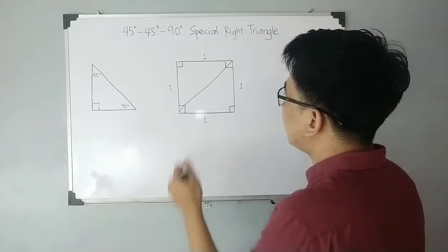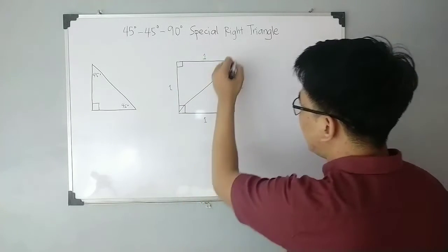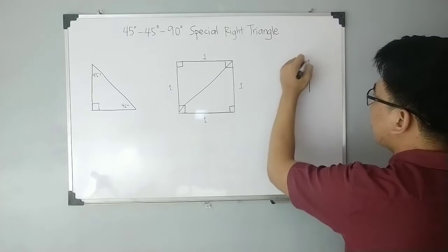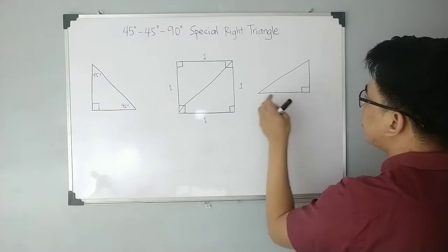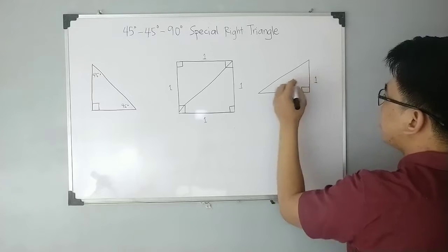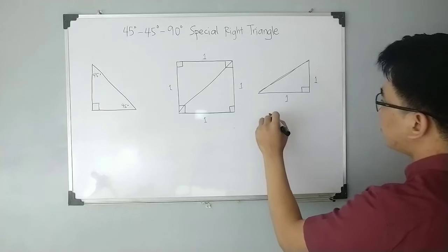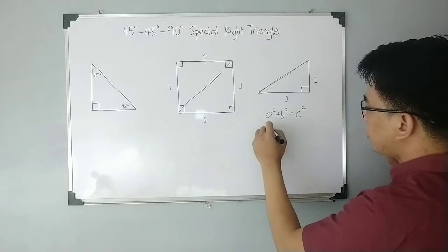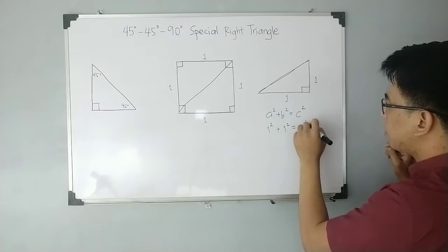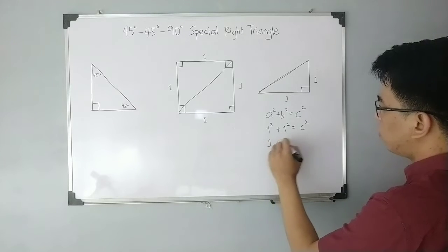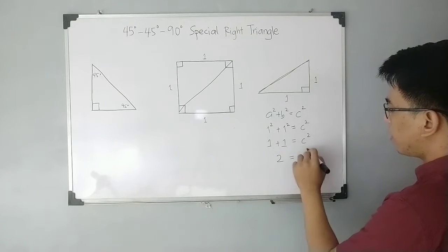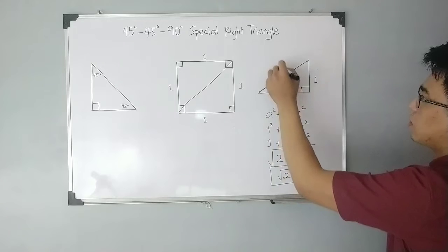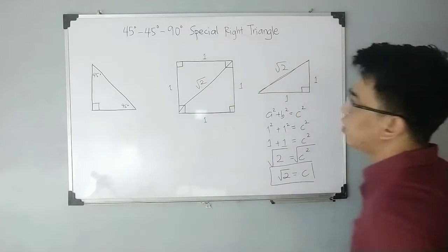We can treat one half of the square as a right triangle and solve for the hypotenuse, which is the diagonal. Given the Pythagorean theorem: a² + b² = c². Substituting the legs: 1² + 1² = c², which gives 1 + 1 = c², so 2 = c². Therefore the value of c is √2. The length of this diagonal is √2.